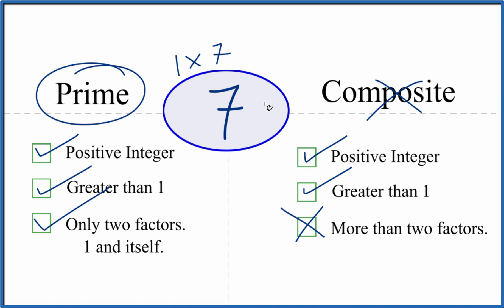This is Dr. B looking at whether the number 7 is prime or composite. It's prime. Thanks for watching.